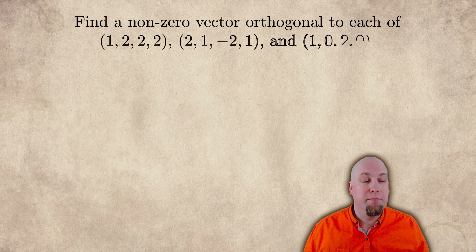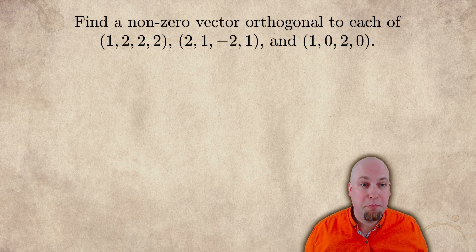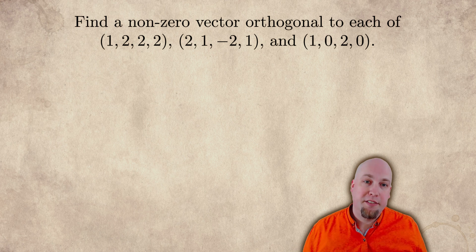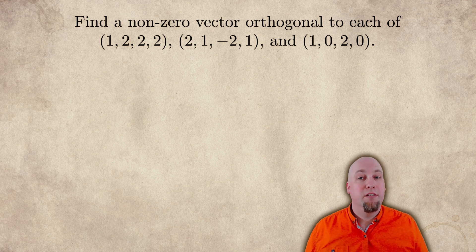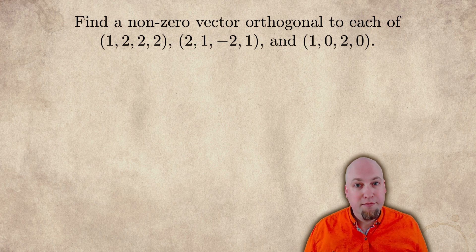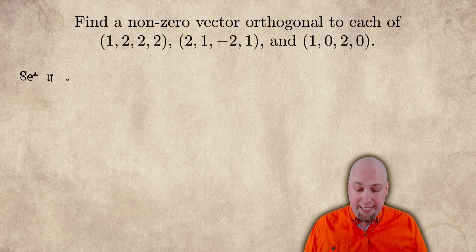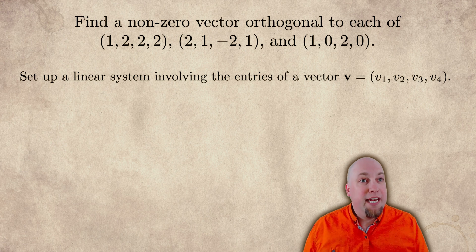Let's ramp up again, this time to four dimensions where geometric considerations won't help us anymore — there's no cross product. The way to solve this problem now is linear systems. Suppose we're asked to find a vector that's orthogonal to each of (1, 2, 2, 2), (2, 1, -2, 1), and (1, 0, 2, 0). These are three vectors living in four dimensional space and we're trying to find a vector that's perpendicular to all of them. We're going to mimic exactly what we did before.